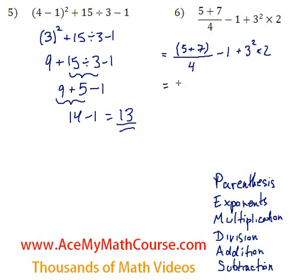So 5 plus 7 is 12. That's just basically divided by 4.